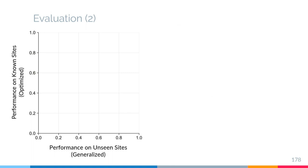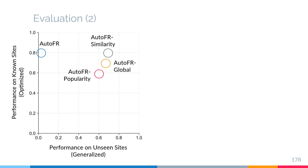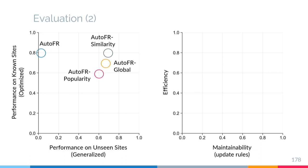AutoFR Similarity and AutoFR Global perform best for both known and unseen sites. However, if we want to apply these techniques in the wild to generate real filter lists, we also have to consider efficiency — how long it takes to run these approaches — and maintainability, namely how long it takes to update rules or add an unseen site to our set of known sites.